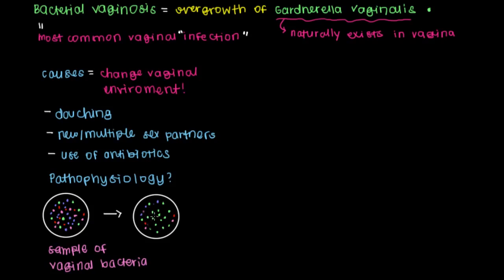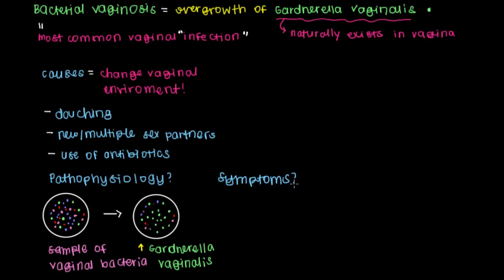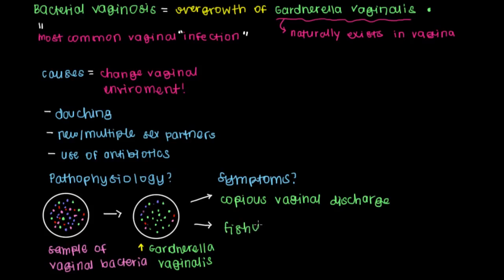So they'll reproduce and overgrow, and you're going to end up having bacterial vaginosis. The key here is that you have an increase in the population of Gardnerella vaginalis bacteria, and that leads to your symptoms. One of the main features associated with bacterial vaginosis, or BV, is copious vaginal discharge. This discharge also characteristically has a fishy odor. And perhaps one of the most dangerous effects is that pregnant women can deliver their babies early — referred to as preterm labor — before the baby has enough time to properly mature in the uterus.